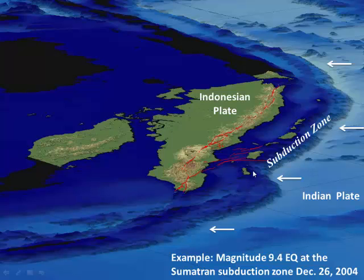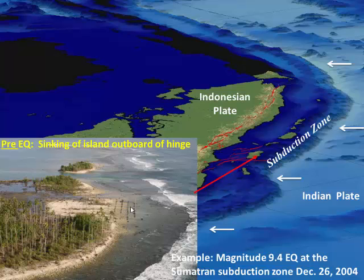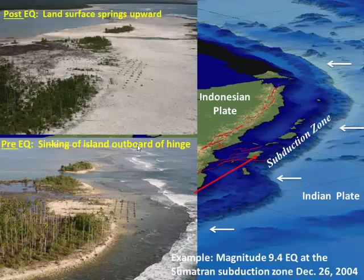What happens to these islands during the seismic cycle? During the interseismic period, before the earthquake, we can see that entire palm tree plantations are being pulled down underwater. This is a palm tree farm planted maybe 20, 30, 50 years ago, and over time the whole thing is now being pulled down underwater. Now after the earthquake — here's that same palm tree plantation — boom, high and dry. It snapped back a couple meters vertically.